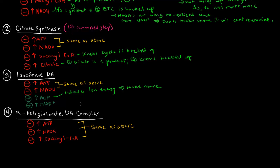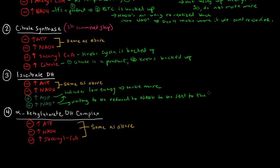High NAD+ also acts as an activator of isocitrate dehydrogenase, indicating low energy as well. If there's a bunch of NAD+, they're basically waiting to be reduced to NADH, to be sent to the electron transport chain to make energy in the form of ATP.